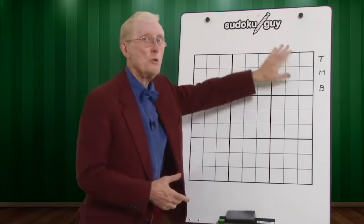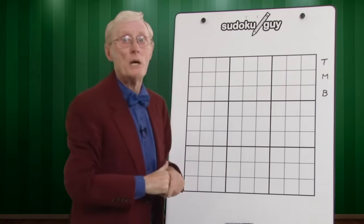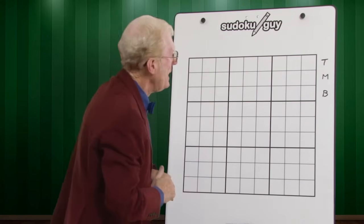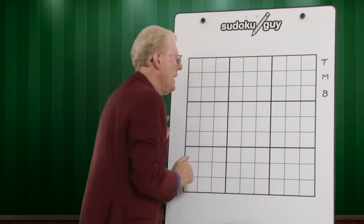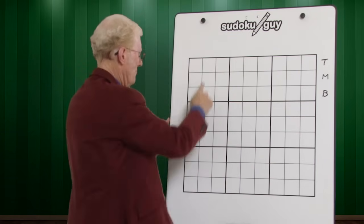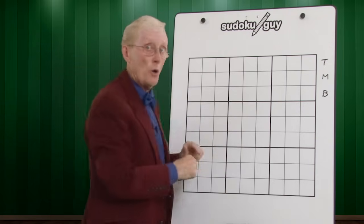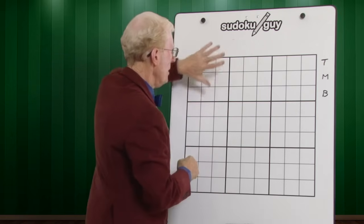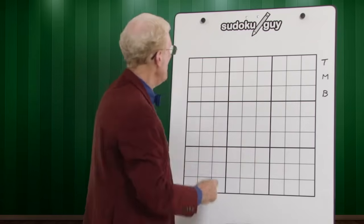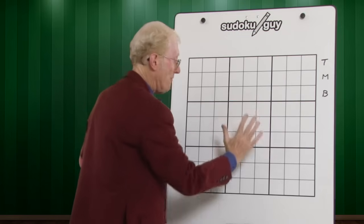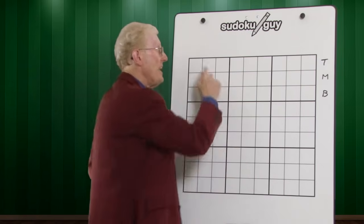Here we have a Sudoku grid, and each little white square here I call cells. The puzzle is made up of rows that go horizontally, and it's made up of vertical columns. There's also these big squares, which I call blocks. There's horizontal blocks — three of them — and vertical blocks. Our first lesson, I'm going to be talking about these three blocks in terms of their rows.